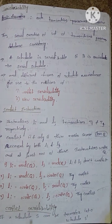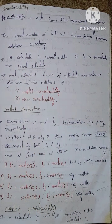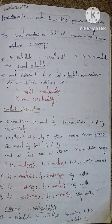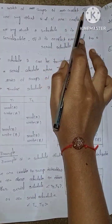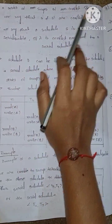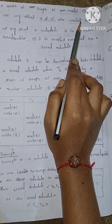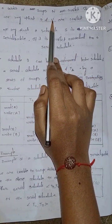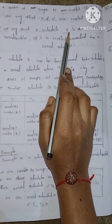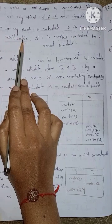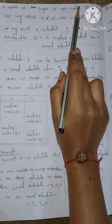Conflict serializability: if a schedule S can be transformed into a schedule S' by a series of swaps of non-conflicting instructions, we say that S and S' are conflict equivalent. We say that schedule S is conflict serializable if it is conflict equivalent to a serial schedule.